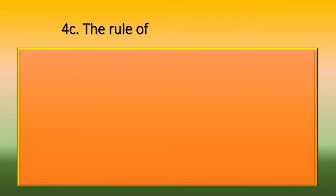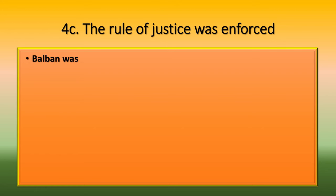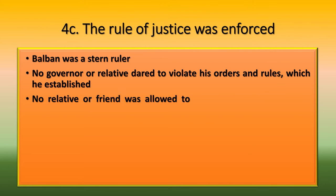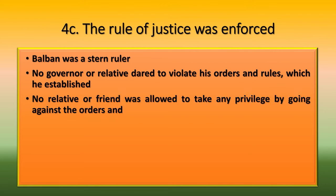The rule of justice was strictly enforced. Balban was a stern ruler — no governor or relative dared to violate his orders and rules. No relative or friend was allowed to take any privilege by going against Balban's orders and regulations.